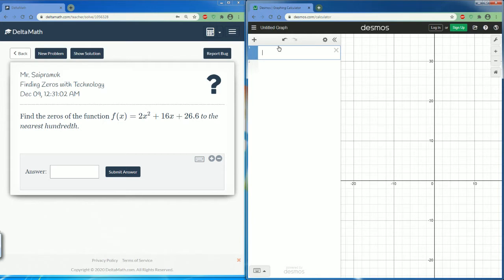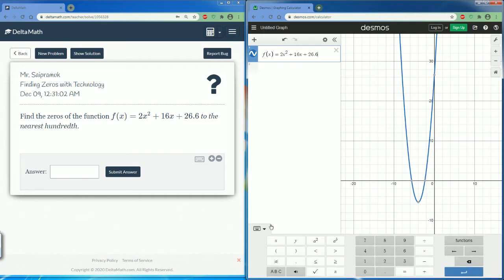So we want to enter it this exact way we see it. So f(x) = 2x² + 16x + 26.6. If you can't type it in using your keyboard, you can use the show keypad here on the bottom of Desmos and you can enter it in here.